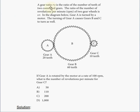A gear ratio R, S is the ratio of the number of teeth of two connected gears. The ratio of the number of revolutions per minute, RPM, of two gear wheels is S to R. So it's the other way around.